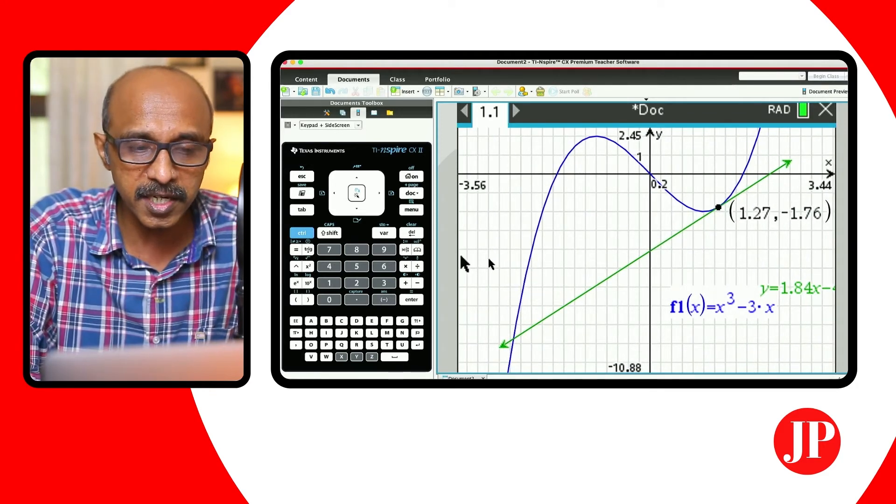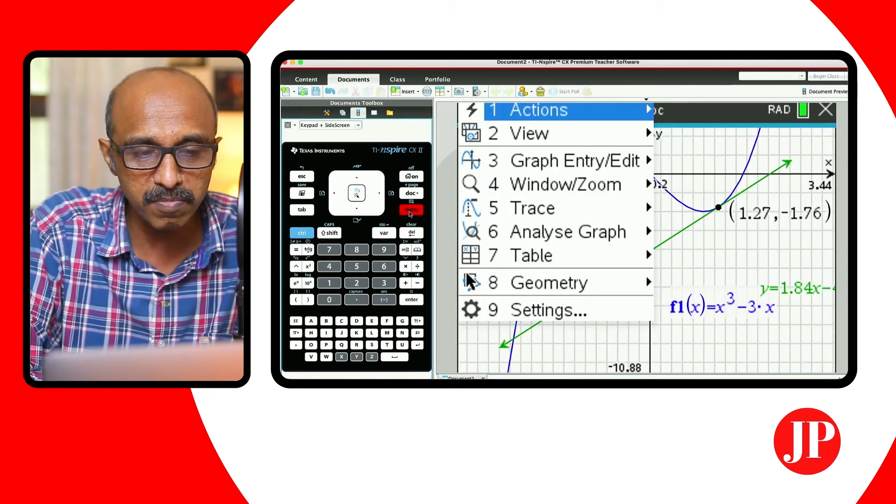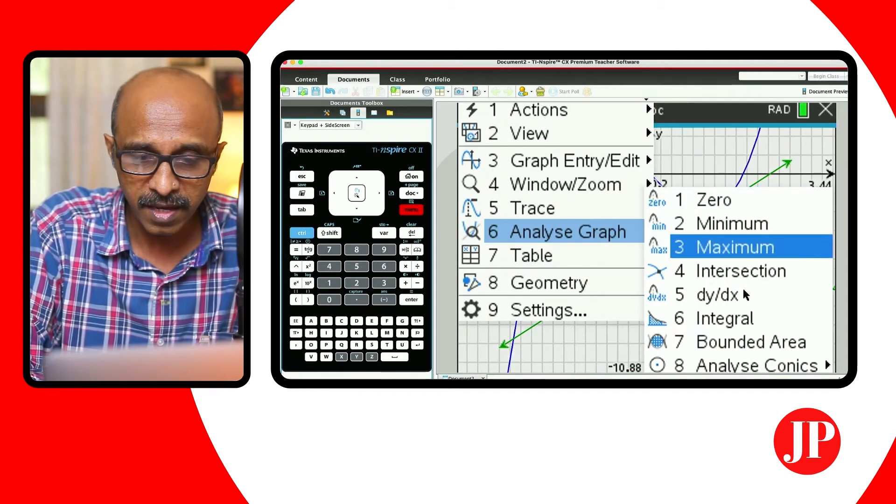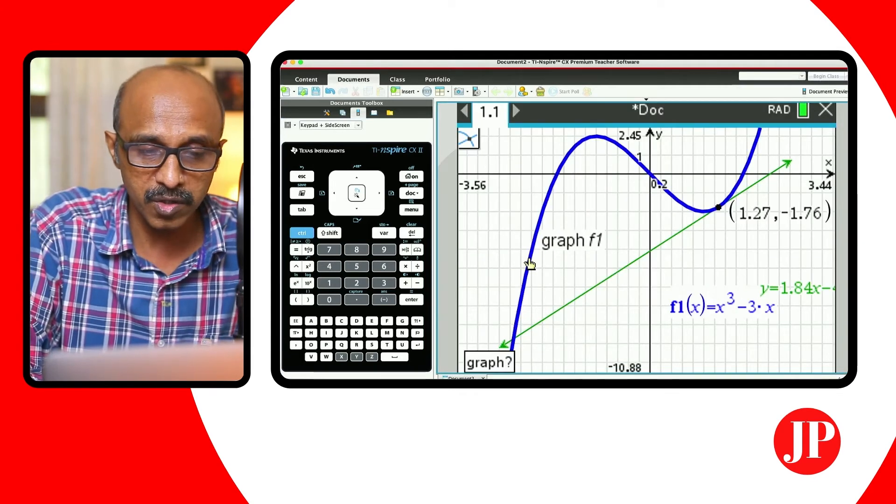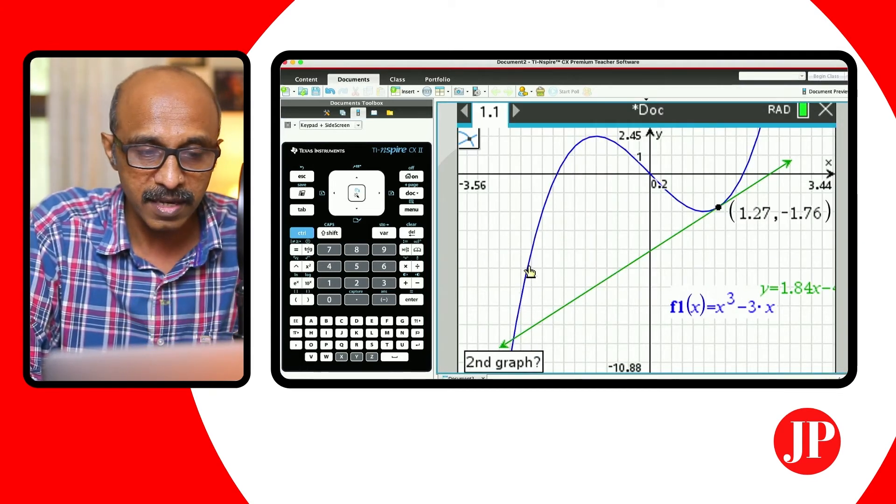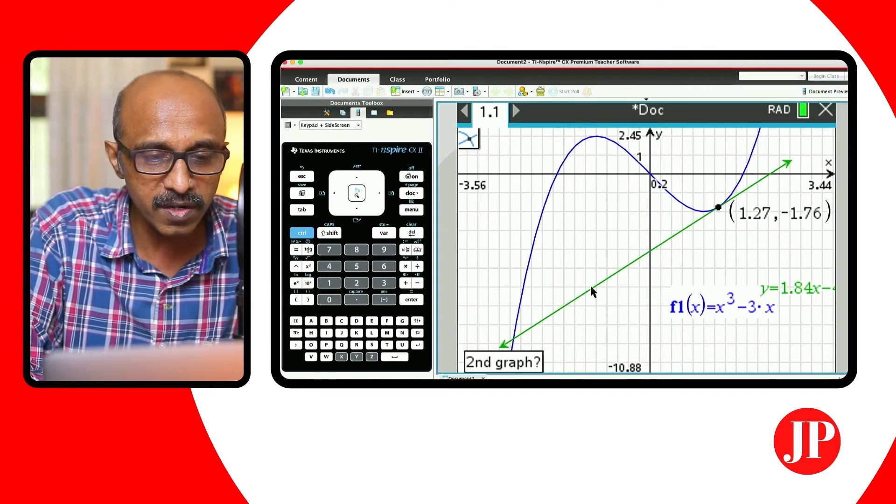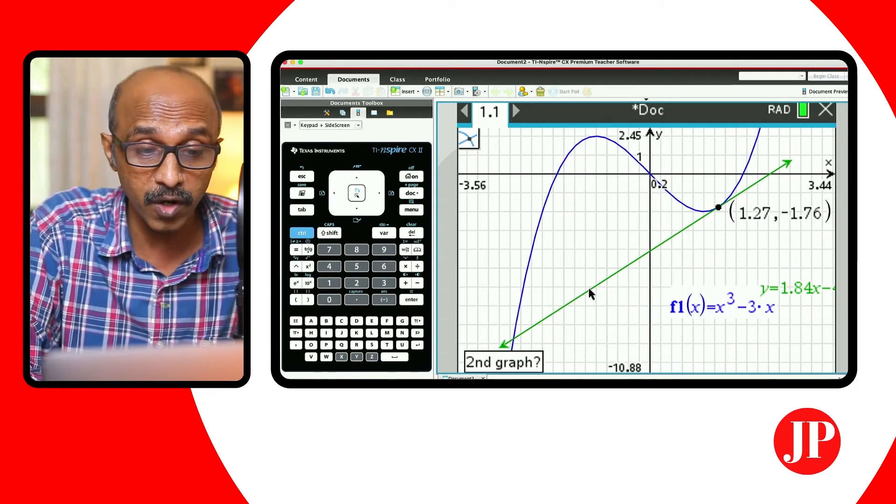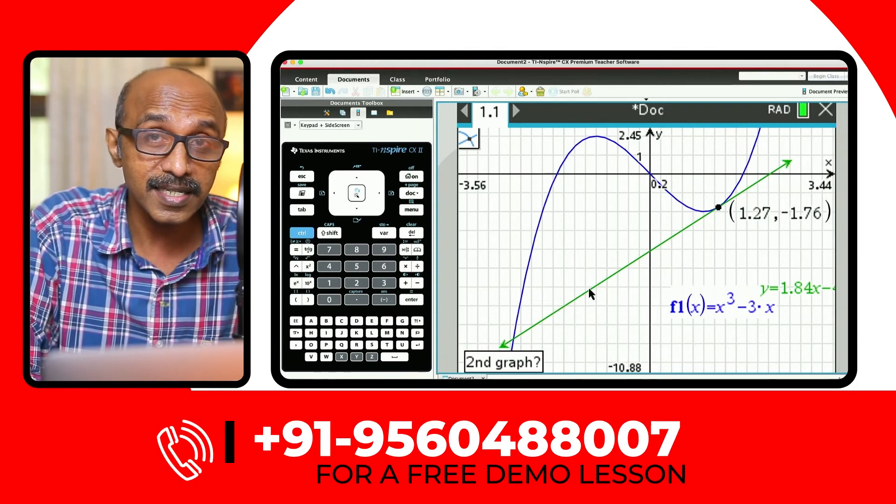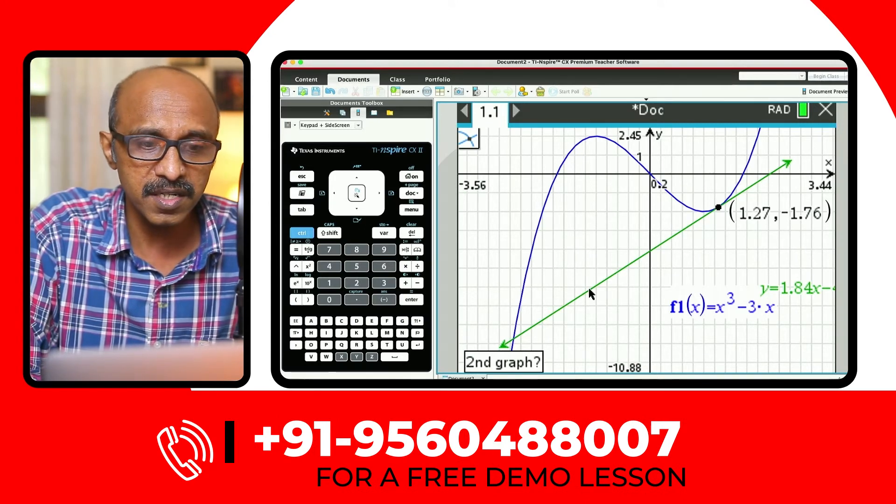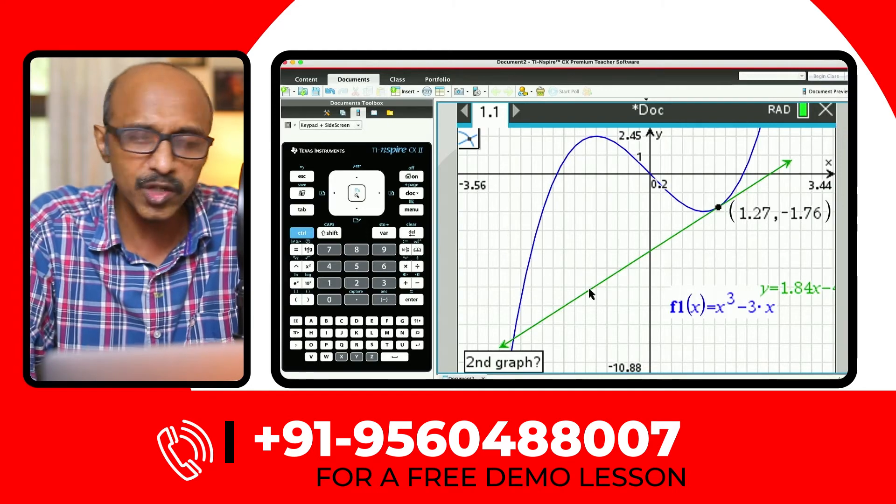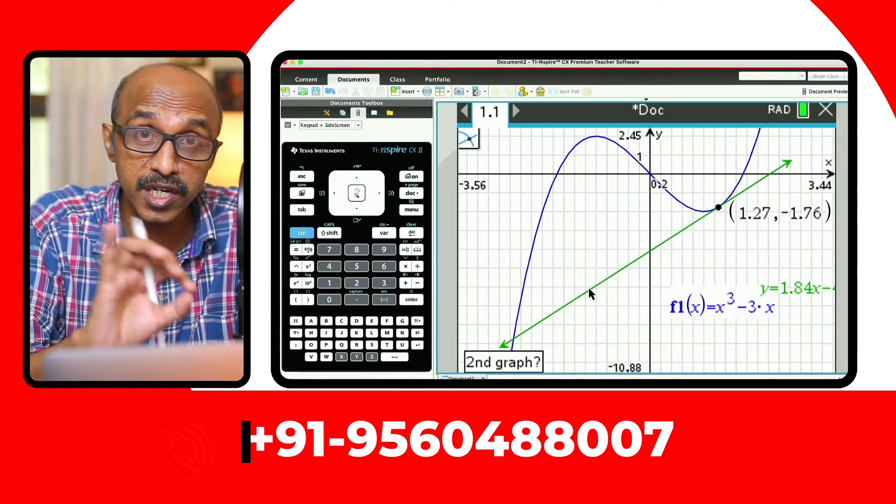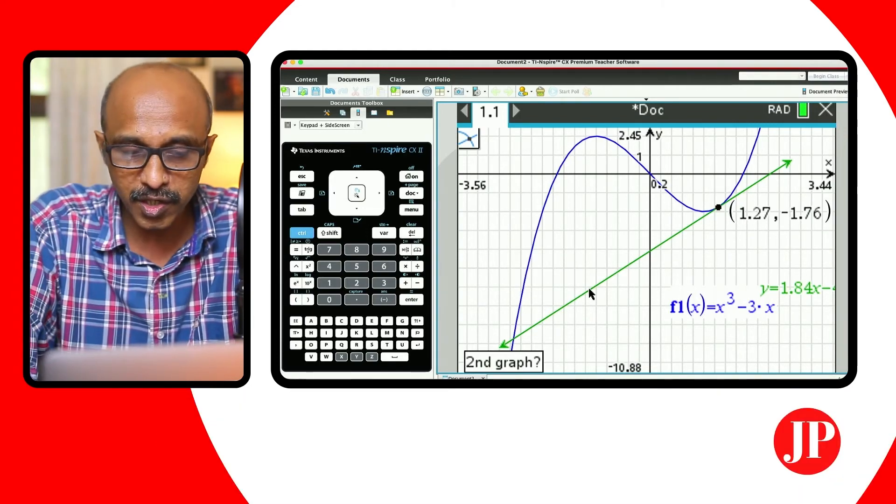Now, if I use the traditional technique to find the point of intersection, if I go to menu, analyze graph, intersection point, it will ask the question, which graph are we talking about? So, graph one, that's fine. The second graph, when I hover over the green graph, the tangent line that we've drawn, it doesn't recognize it as a graph or a function. I mean, it is a function, but I don't know why it is coded this way, but actually this technique will not work. The traditional technique to find the point of intersection.